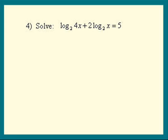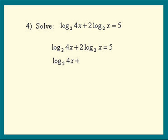Here's example 4 — we saw a similar example last time. Before combining the logs, we have to use the power rule to get the 2 out of the way. Bring the 2 inside the log as the power of x. Now we have a log plus a log, so the product rule applies. We get log of 4x times x squared, or 4x cubed.